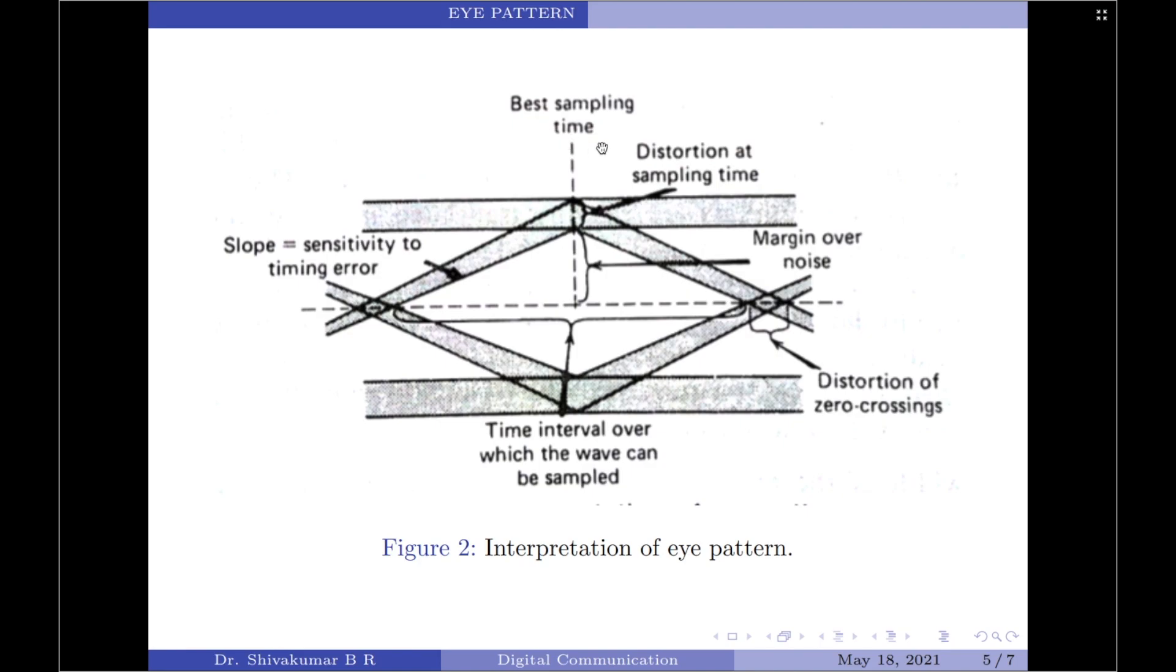Moving on, the sensitivity of the system to timing errors is determined by the rate of closure of the eye as the sampling time is varied. This can also be measured by calculating the slope of the eye trace. We have given that here.